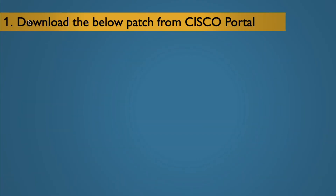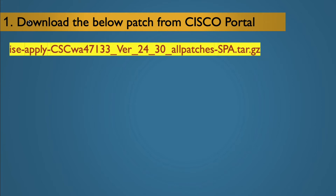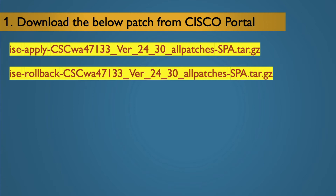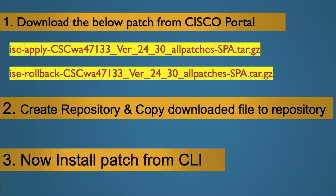Our first step will be to download the patch from the Cisco portal — we will download the ISE apply patch and also a rollback patch in case of any issue. The second step will be to create a repository and copy the downloaded file to it. The third step will be to install the patch from the CLI.